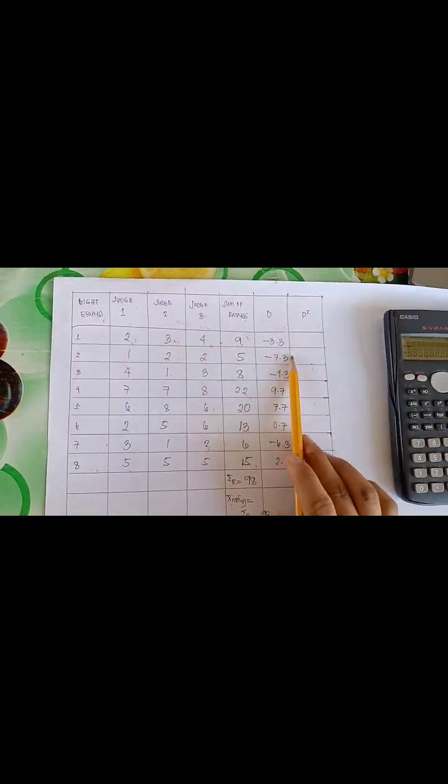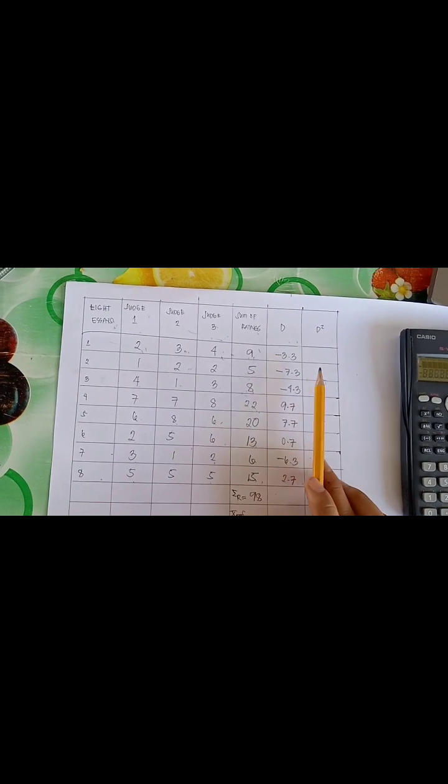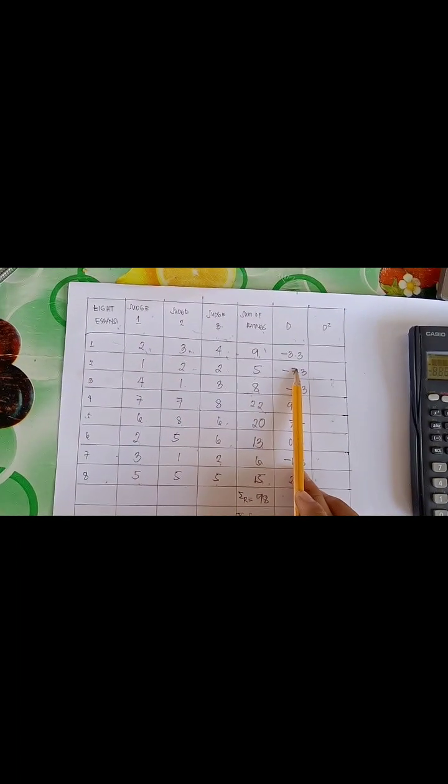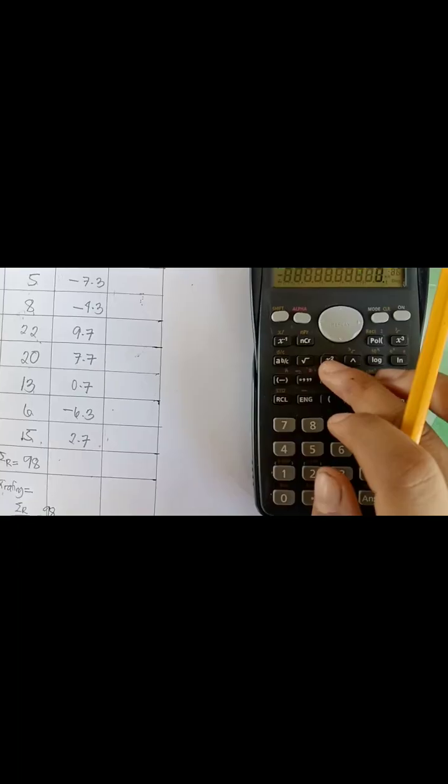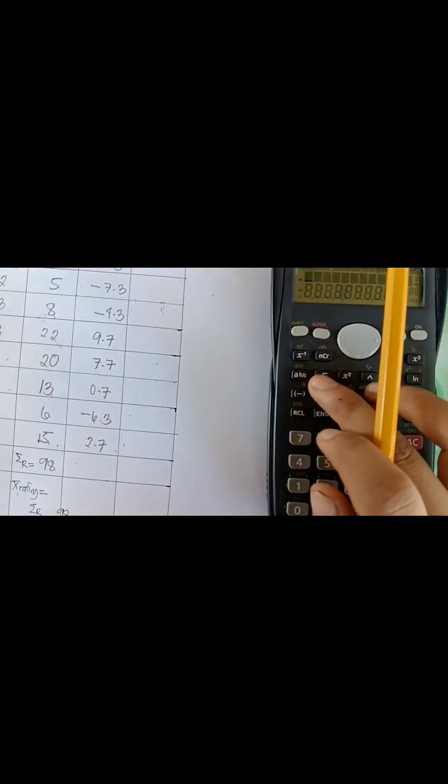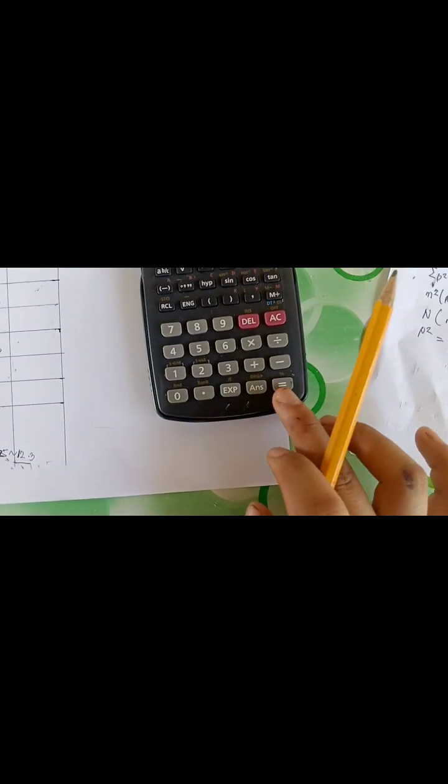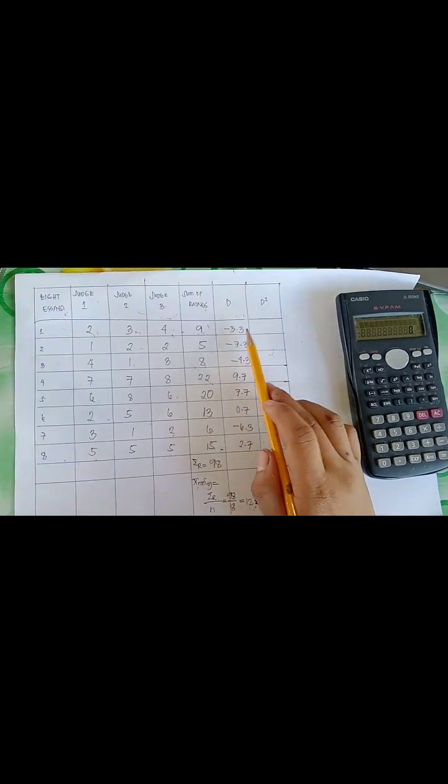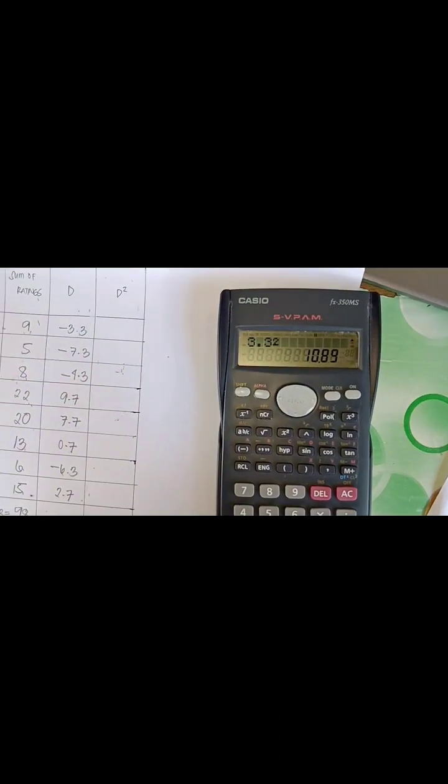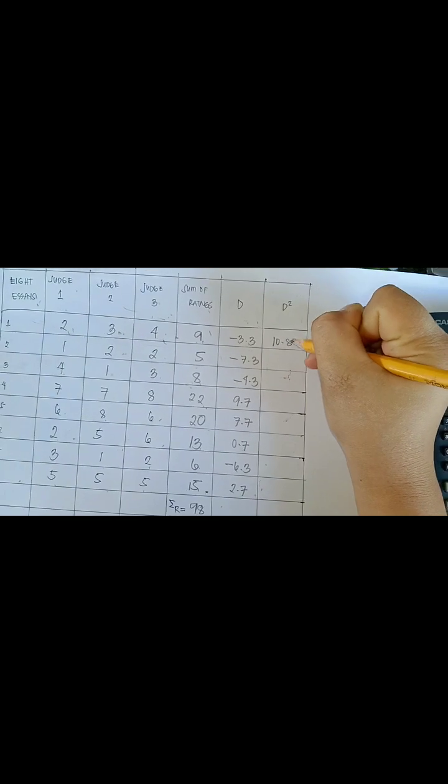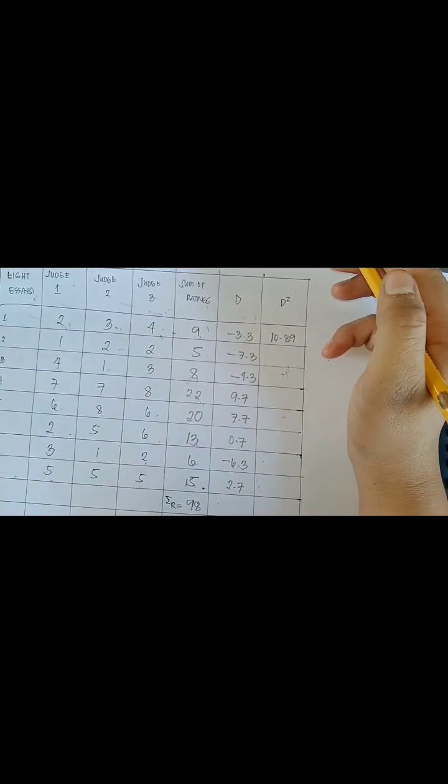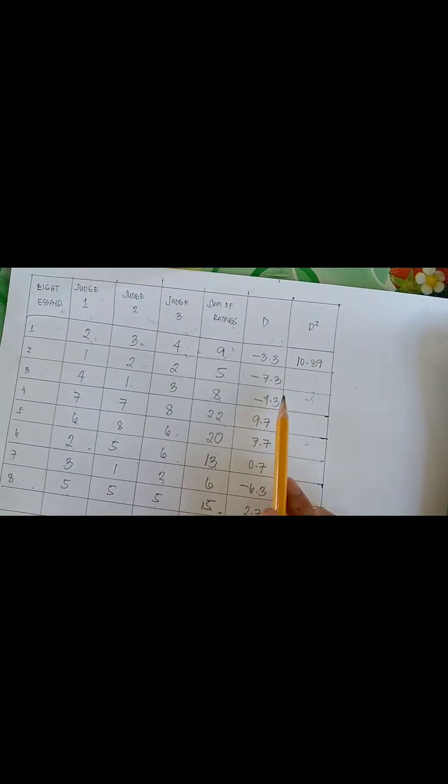And the same mathematical operation we are going to apply for the rest. So now since the D value is complete, we can now proceed. We have to obtain the D squared of each essay by simply entering each value in the D column and press the X squared symbol beside the square symbol in the scientific calculator. Then press equal for the answer. And in this case, we have negative 3.3 squared equal to 10.89.